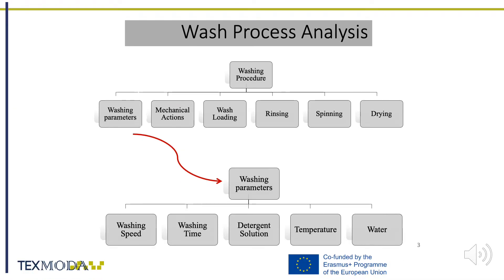A wash process analysis led us to the following conclusions. Parameters that are important are washing speed, meaning RPMs (revolutions per minute) of the washing machine drum, the time of washing, the type of detergent used, water temperature and water influence, mainly oxidation.